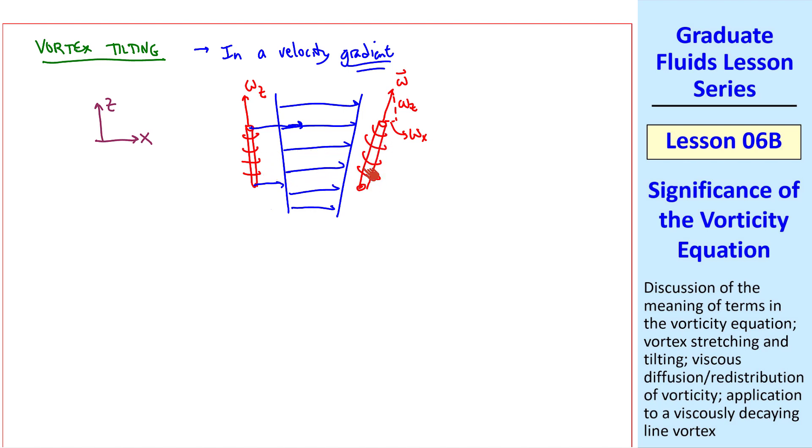it also stretches. So the magnitude of omega increases, but some of its vorticity, which was all in the z direction, is now in the x direction. This vortex tilting mechanism is a mechanism for generating 3D vorticity. In other words, we can start with vorticity in one direction only, but end up with vorticity components in two or more directions. This is a direct result of vortex tilting.